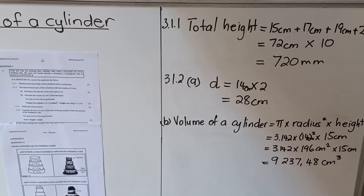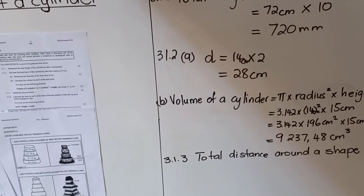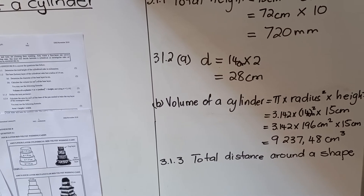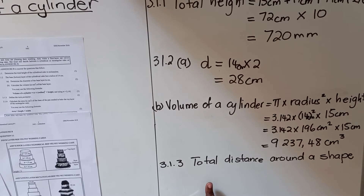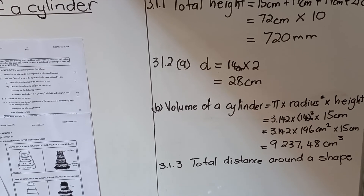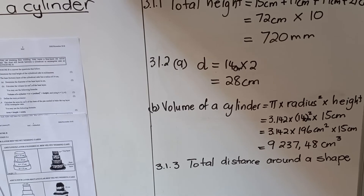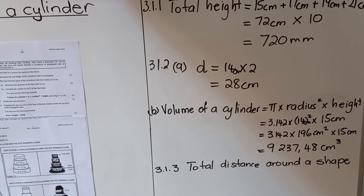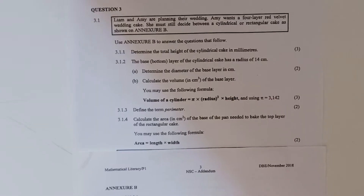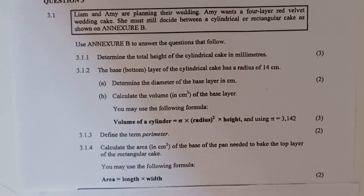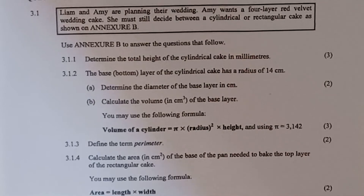Question 3.1.3 asks you to define the term perimeter. The perimeter is the total distance around a shape — like a fence going around whatever shape you have.